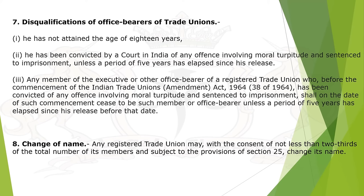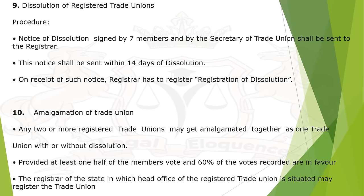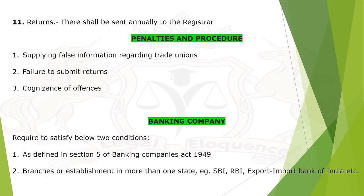Dissolution of registered trade union procedure: notice of dissolution signed by seven members and by the secretary of the trade union shall be sent to the registrar within 14 days of dissolution; on receipt, registrar registers the dissolution. Amalgamation of trade union: any two or more registered trade unions may get amalgamated together as one trade union, with or without dissolution, provided at least one-half of the members vote and 60% of the votes recorded are in favour. The registrar of the state in which the head office is situated may register the amalgamation. Returns: annual returns shall be sent to the registrar. Penalties and procedures: supplying false information regarding trade union, failure to submit returns, and cognizance of offences.